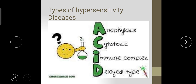Next are the types of hypersensitivity disease. There are four categories. In short form we can call it ACID: A for Anaphylaxis, C for Cytotoxic, I for Immune complex, and D for Delayed. So the four types are anaphylaxis, cytotoxic, immune complex, and delayed hypersensitivity.